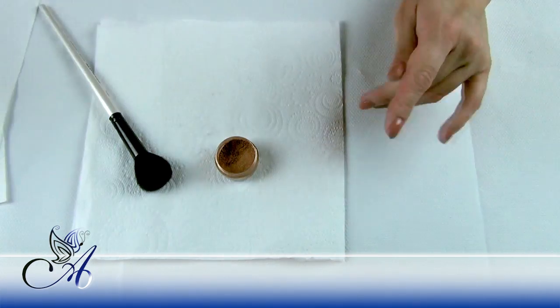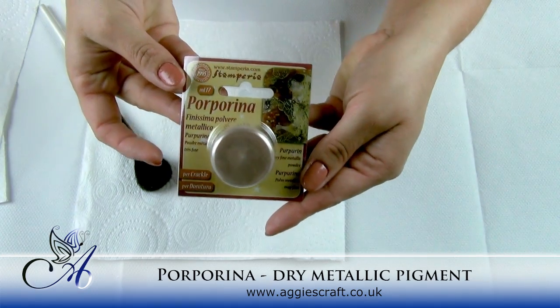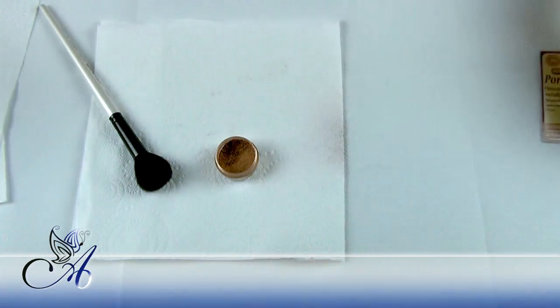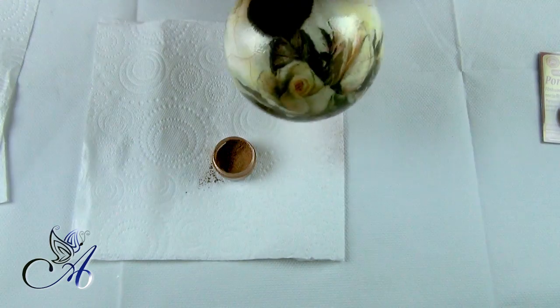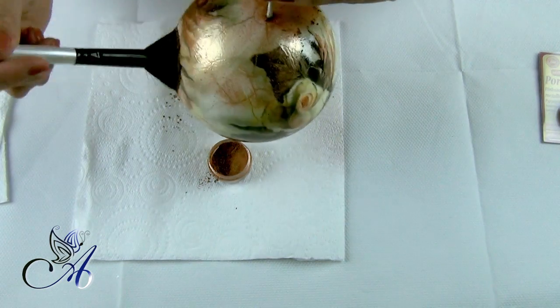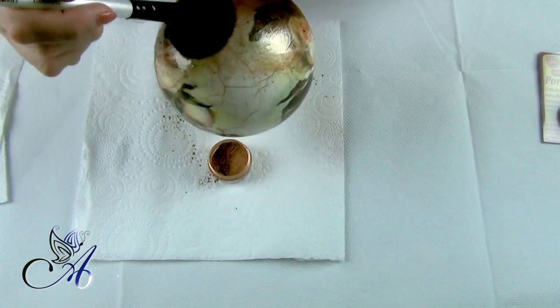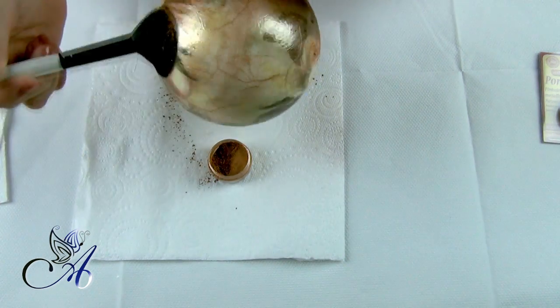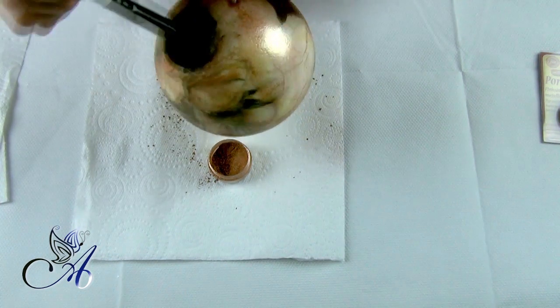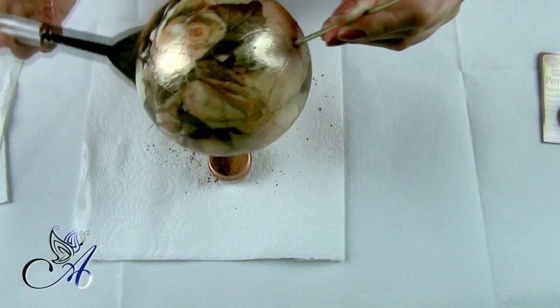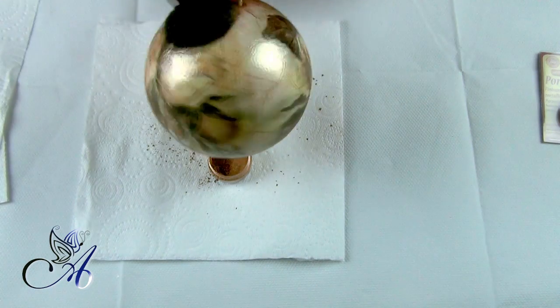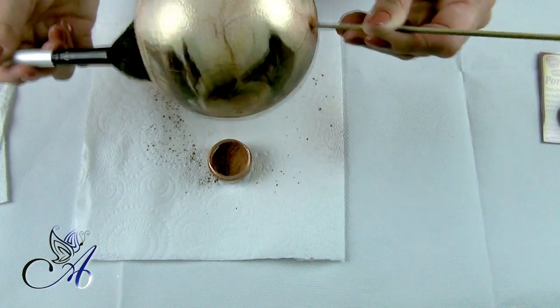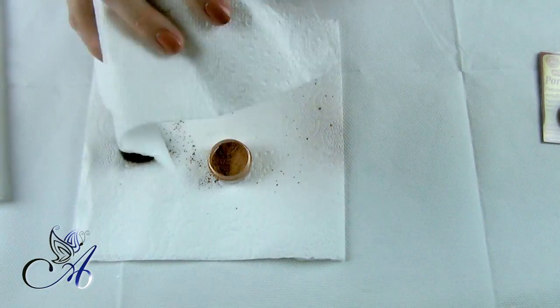When everything is perfectly dry we can start filling cracks with dry metallic pigment called purpurina. Use a large soft brush to do so and wipe excess with a kitchen towel. You can buy purpurina in different colors from white to black. I have decided to use copper.